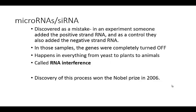It was originally discovered as a mistake. In the particular experiment, researchers added the positive-stranded RNA as a control and also added the negative-stranded RNA. Because they were complementary to one another, they produced double-stranded RNA. In those samples, the genes were completely turned off — they expected more expression of their gene by adding more RNA, not nothing. They were very surprised, but continued to study this across all sorts of different organisms, from yeast to plants to animals. We call this process RNA interference. Many of these discoveries happened in the late 90s and early 2000s, and the discovery of this process won the Nobel Prize in 2006.